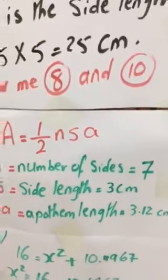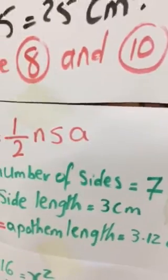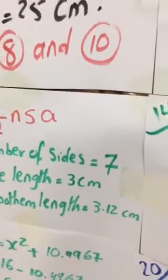According to the heptagon, yes excellent, because we have heptagon so we have seven sides. And as we know, the side length is 3 and the apothem length is 3.12. Again, we will go back where we start, excellent guys.